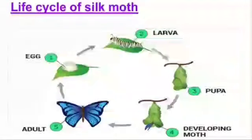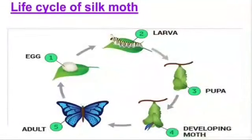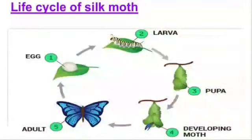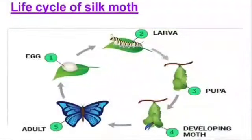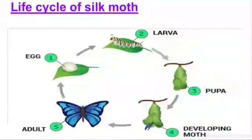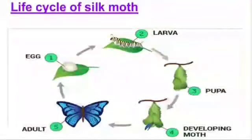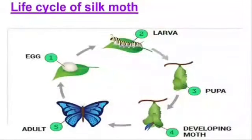A larva is formed. In this stage, the silkworm spins a protective cocoon around itself, and then the pupa stage is formed. After that, this pupa changes into an adult moth. The female moth again lays eggs, and this cycle continues. So here we can see that the caterpillar has to pass through various stages to become an adult moth.